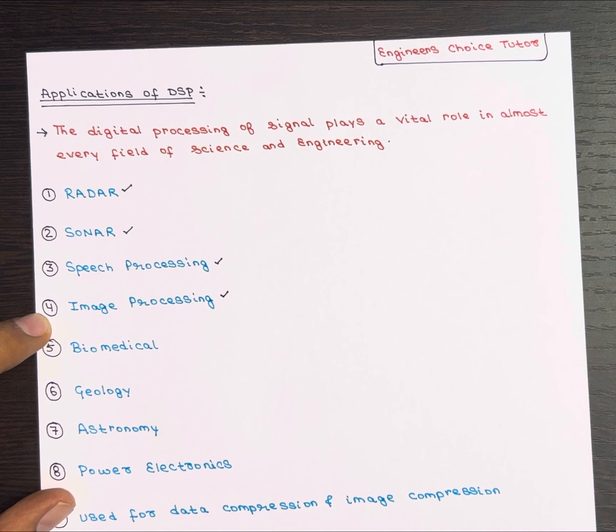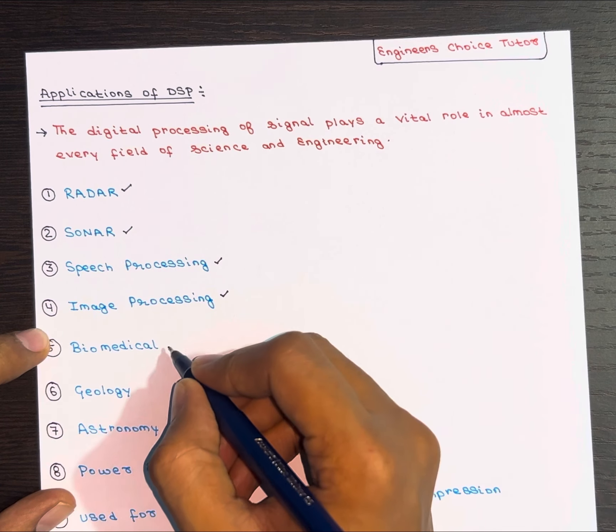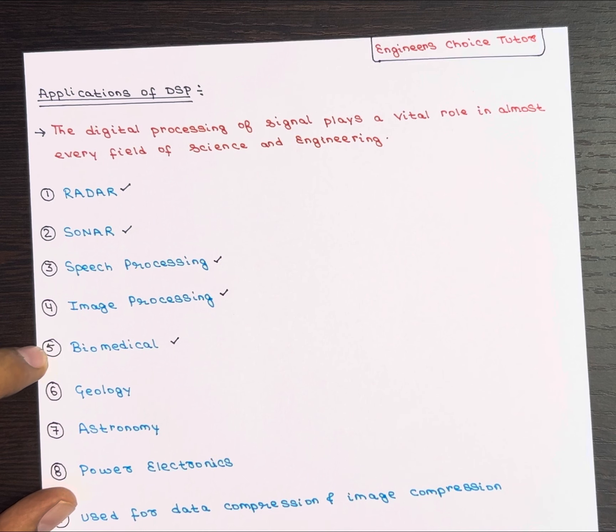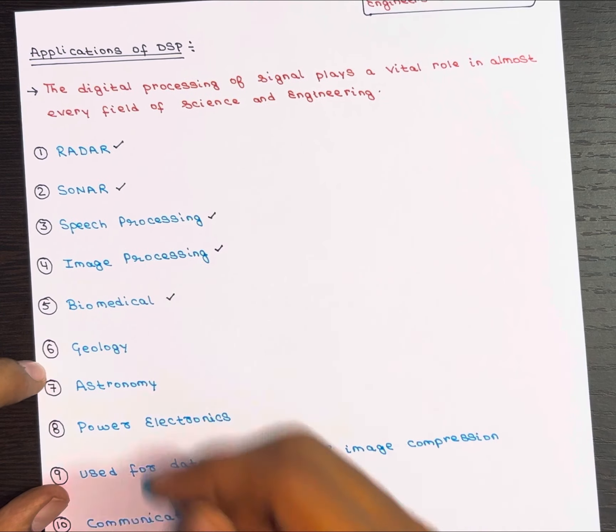Next in the field of biomedical, digital processing is used in various ways. For example, ECG signals can help predict heart diseases, EEG signals are used to study brain behavior, EMG signals help study muscle condition, and MRI scans provide detailed images of the human body.